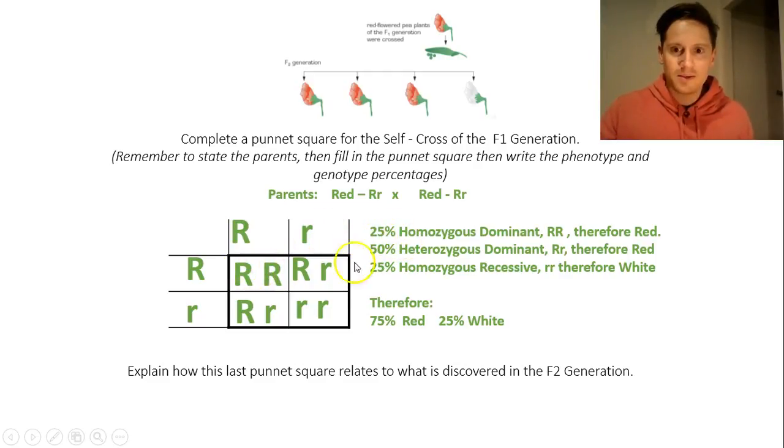25%, so one box, is homozygous dominant, big R, big R, therefore red phenotype. 50%, so these two boxes combined, 25 plus 25, is heterozygous, big R, little r, therefore red phenotype. And 25% homozygous recessive, little r, little r, therefore white. So you've got a phenotype percentage, 75% red total, adding up these two, and 25% white.